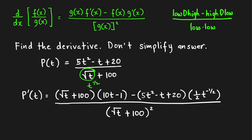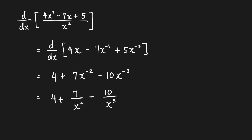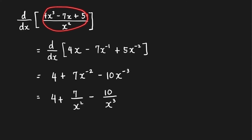Do we always have to apply the quotient rule when differentiating a fraction? The answer is no. For example, suppose we want to find the derivative of a fraction — we might be tempted to apply the quotient rule immediately, but actually you can more easily find the derivative by writing the fraction as a sum or difference of separate fractions.